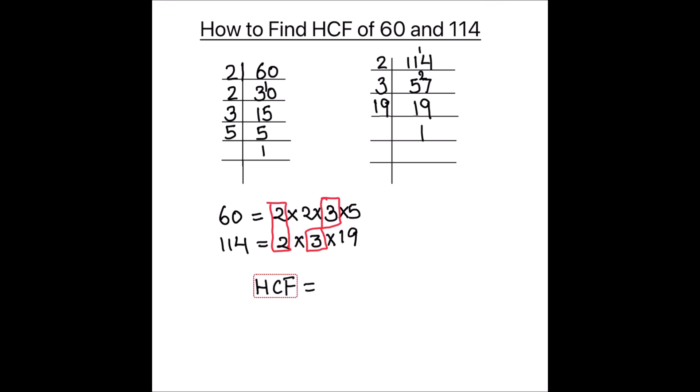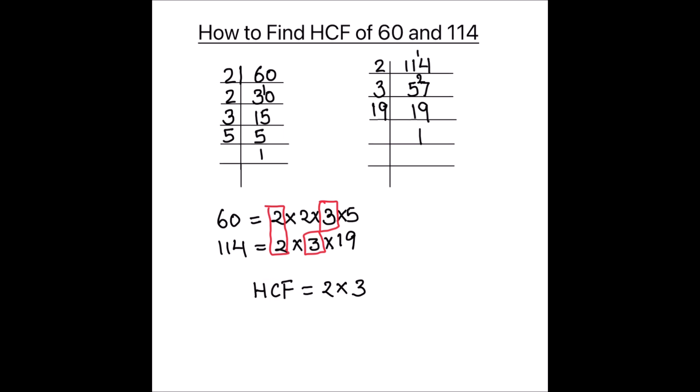For finding the HCF, we are going to take the product of these two factors. Product of the common factors is 2 times 3, which is going to be the HCF of the two numbers. So the HCF of two numbers is 2 times 3, which is 6.